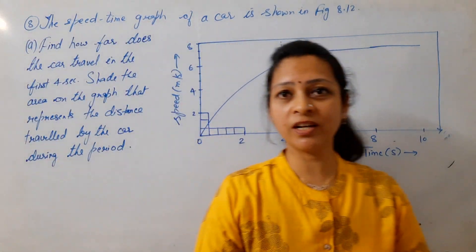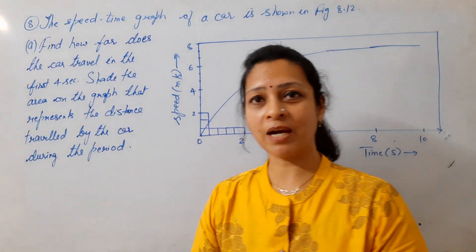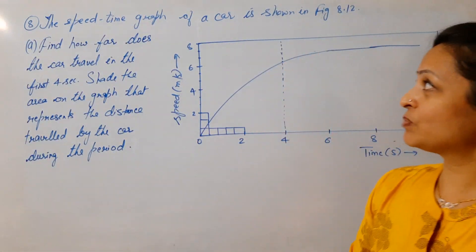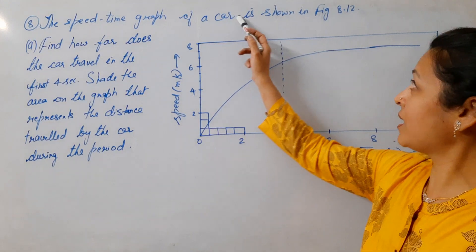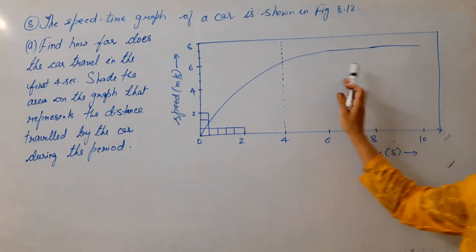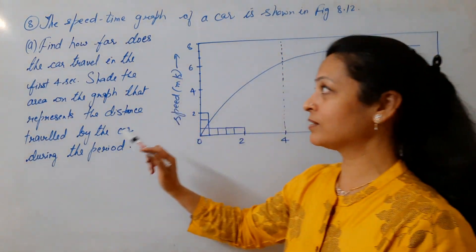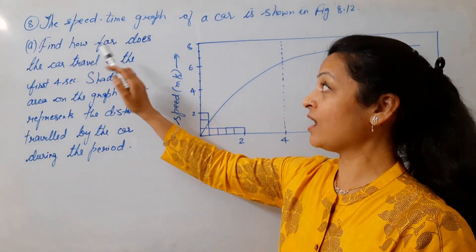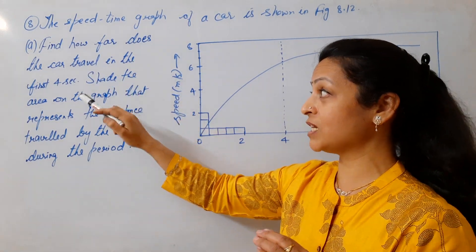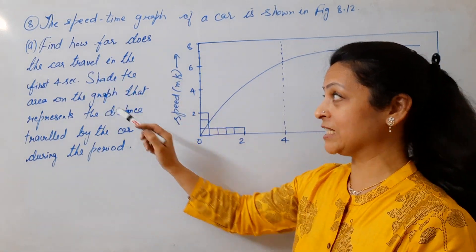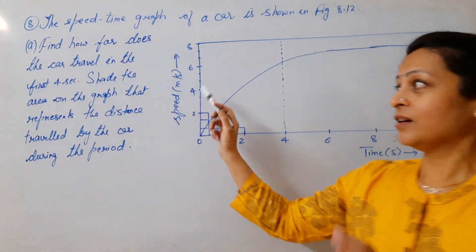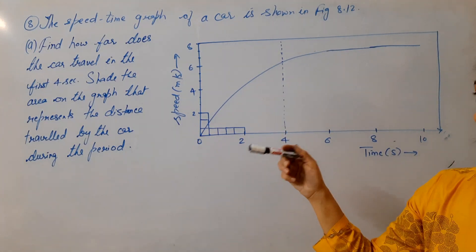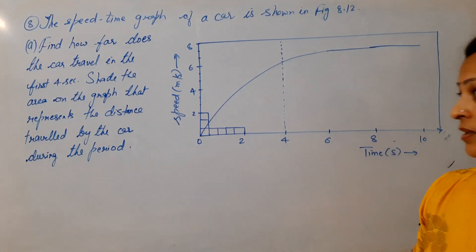Hello students, this is question number 8 of chapter Motion, back exercise. The speed-time graph of a car is shown in figure 8.12. We are going to start with the first part: How far does the car travel in the first 4 seconds? And shade the area on the graph that represents the distance travelled by the car during that period.